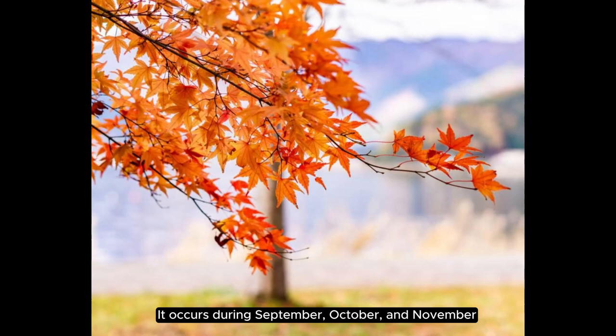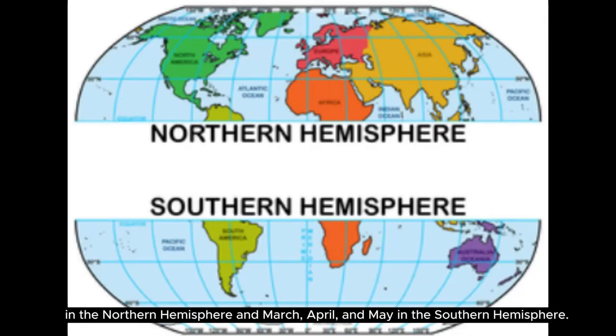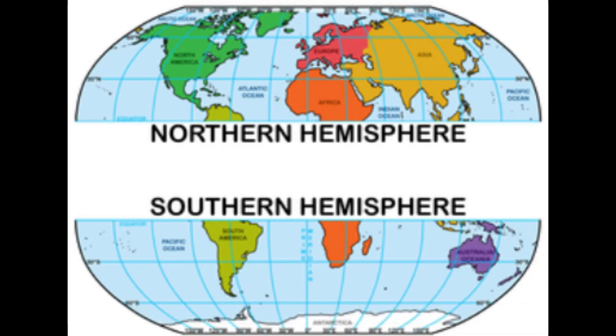Autumn occurs during September, October, and November in the Northern Hemisphere, and March, April, and May in the Southern Hemisphere.